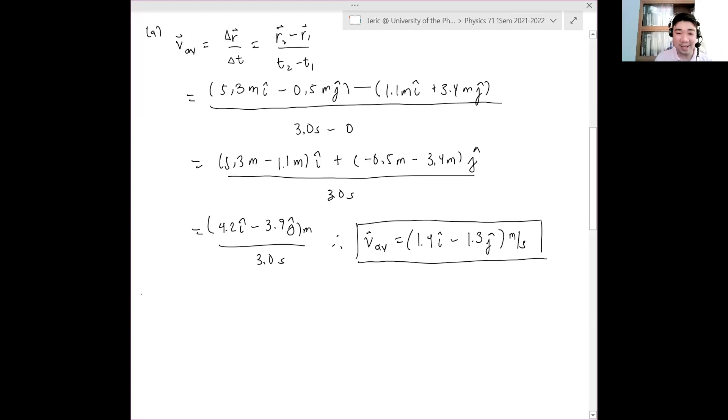So there. Correct units. Then letter B, what is the magnitude of this average velocity? These are just vectors. How do you calculate the magnitude of the average velocity?